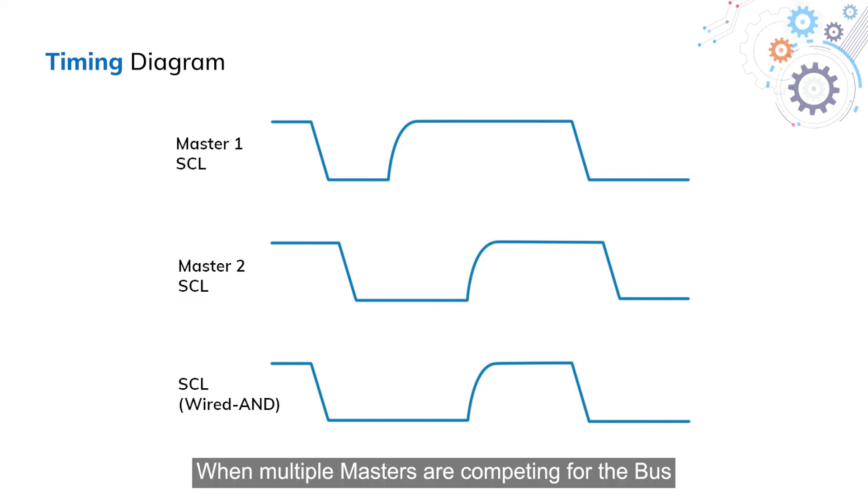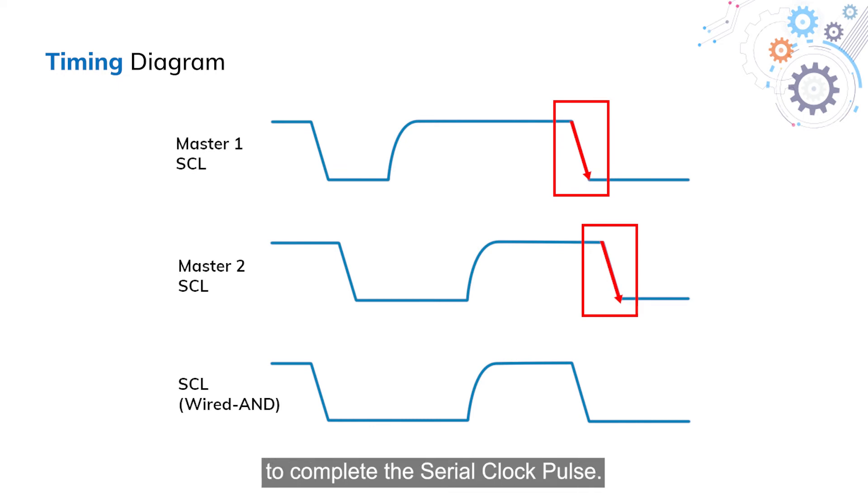When multiple masters are competing for the bus, SCL stays low for as long as the longest period of time that any master pulls down SCL. Only after all the masters have released the SCL can the line be released high for the serial clock pulse. This synchronizes the start of the serial clock for all masters. Similarly, after the start of the serial clock pulse, all the masters pull down on SCL to complete the serial clock pulse.